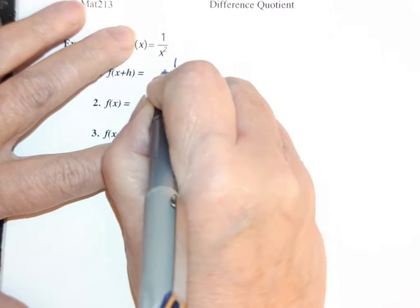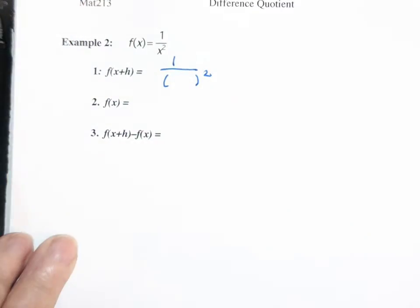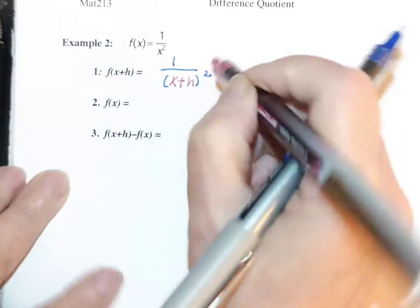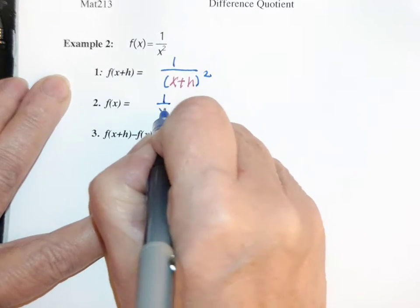So f is just 1 over, take the x out and put in x plus h, and the original function is 1 over x squared.